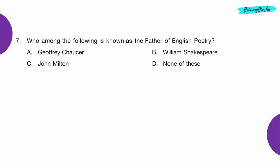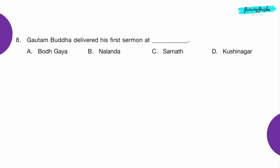Question 7: Who among the following is known as the father of English poetry? Option A: Geoffrey Chaucer.